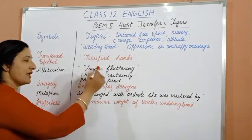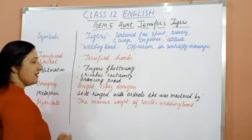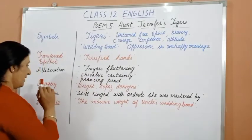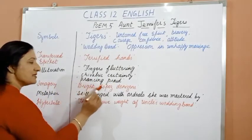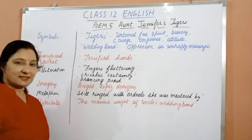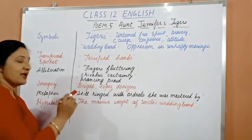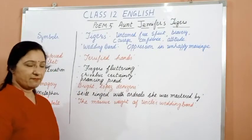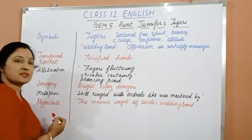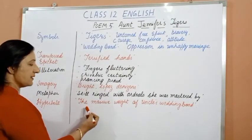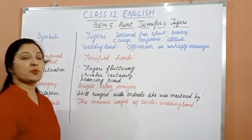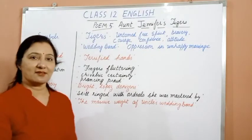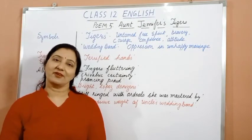She uses alliteration in 'fingers fluttering', 'chivalric certainty', and 'prancing proud'. She uses imagery in 'bright topaz denizens'. She uses metaphor in 'still ringed with ordeals she was mastered by'. Then she uses hyperbole in 'the massive weight of uncle's wedding band'. So 'Aunt Jennifer's Tigers' makes use of all these figures of speech.